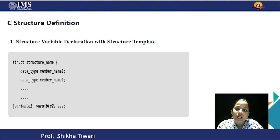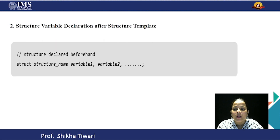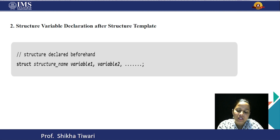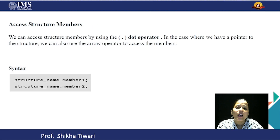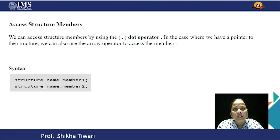So the structure contains members inside, and variables are declared outside. Members are accessed with the help of variables declared outside the structure. We use the dot operator to access members — for example, structure_name.member1. If you are using a pointer, you can use the arrow operator instead. So for the employee example, employee.employee_number accesses that member.